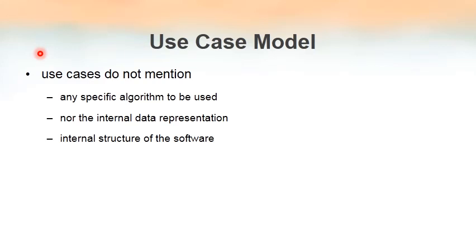When we draw the use case diagram, these things we must keep in mind: we should not specify any algorithm that we are going to use to implement something; we should not represent any internal data; and we should not represent the internal structure of a software. These three things should not appear in a use case diagram. Use case diagram overall represents how a particular user will use a system and which messages are exchanged between the different parts of the system, but not the algorithm or internal details of what happens when the user performs an action.